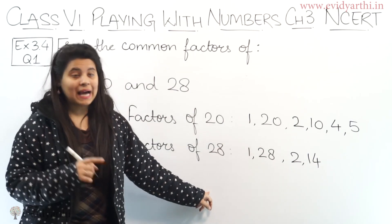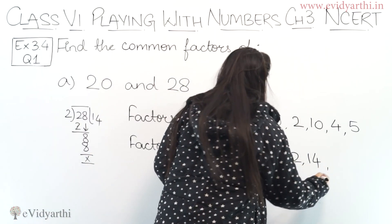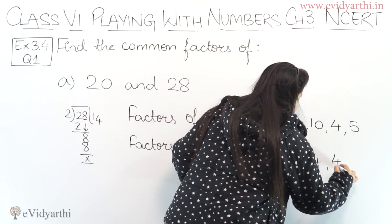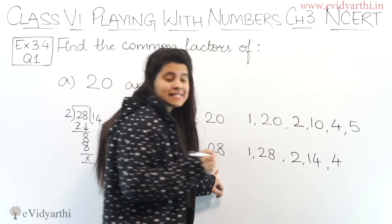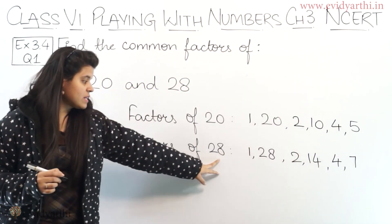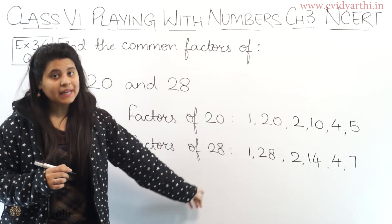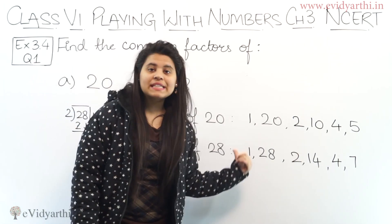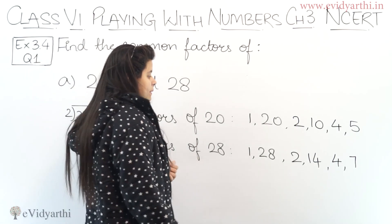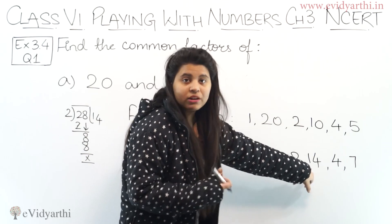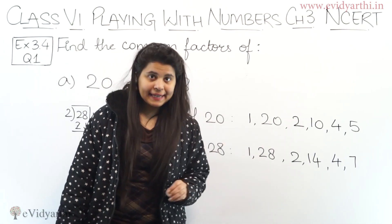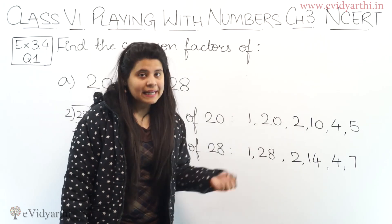Since 14 into 2 is 28, that confirms 14 is a factor. Then 3 and 4 are not in the table for 28. But 4 into 7 is 28, so 7 is also a factor. 8 and 9 are not factors. We have already taken 14 and 28, so those are covered.